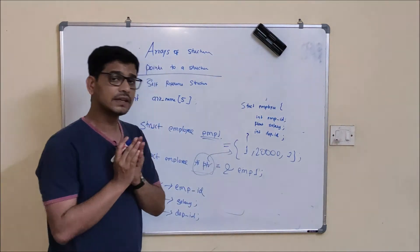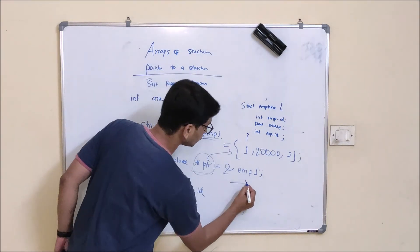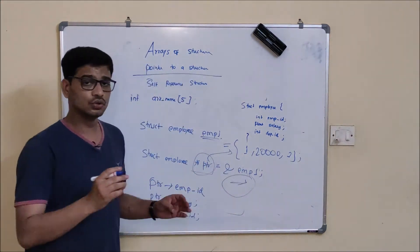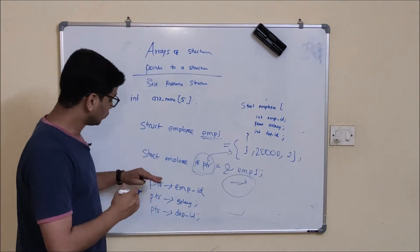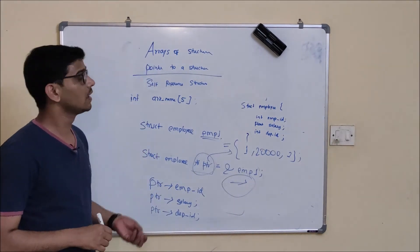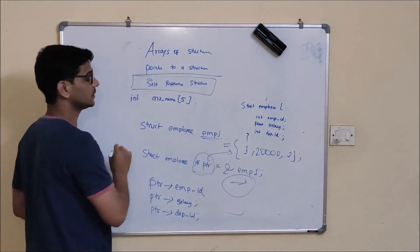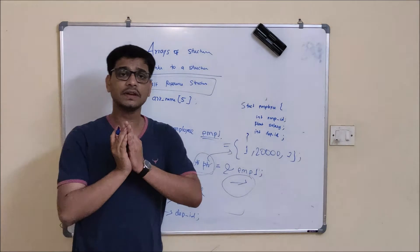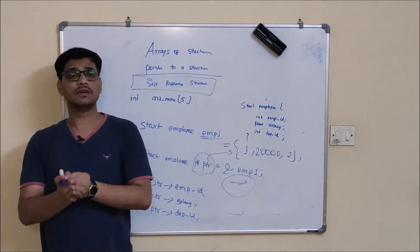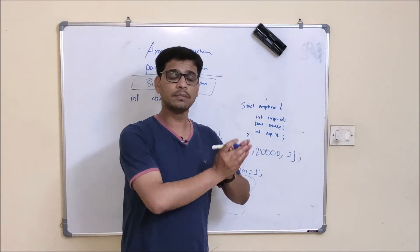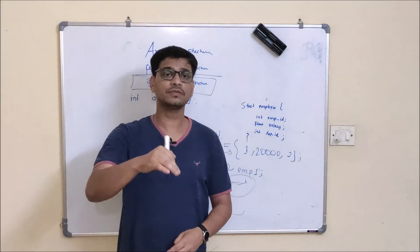The key point to note here is that we use the arrow operator to retrieve values from a structure using a pointer. Now let's look at the third topic — self-referential structures. Self-referential structures are those structures that have one or multiple pointers pointing to a structure of the same type.